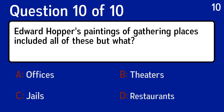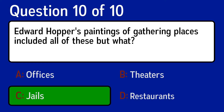And the last question is: Edward Hopper's paintings of gathering places included all of these, but what? The correct answer is C, jails.